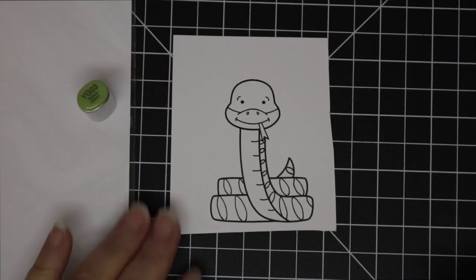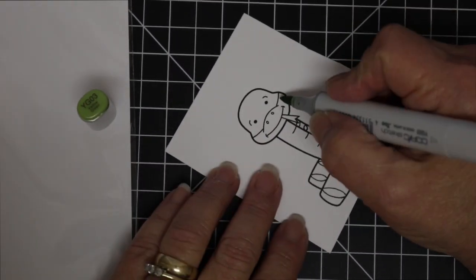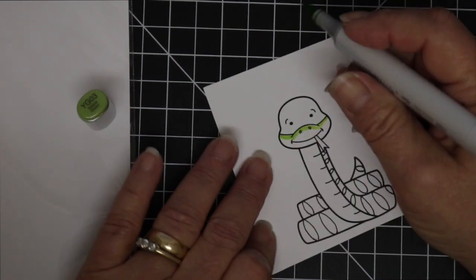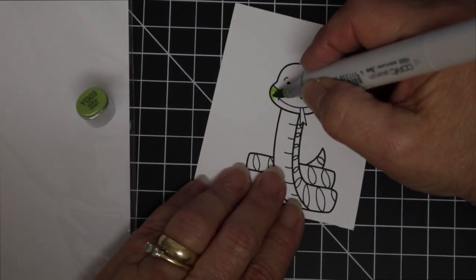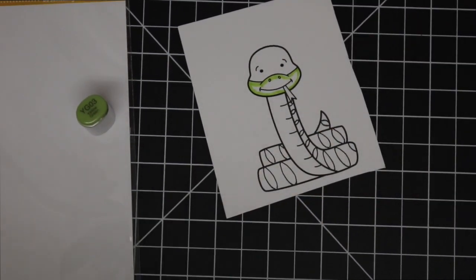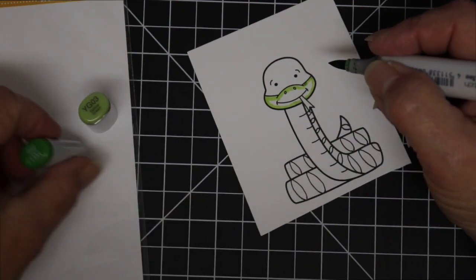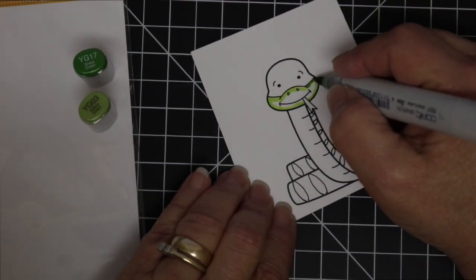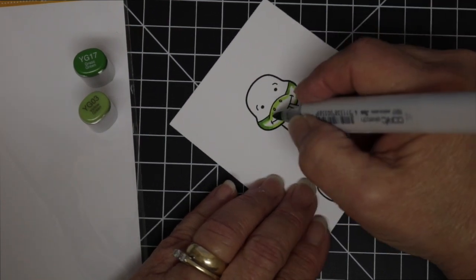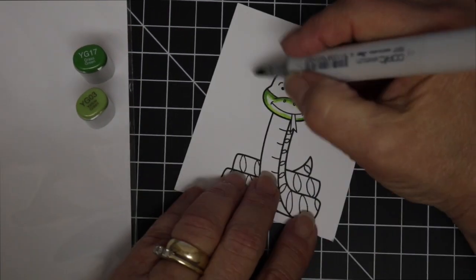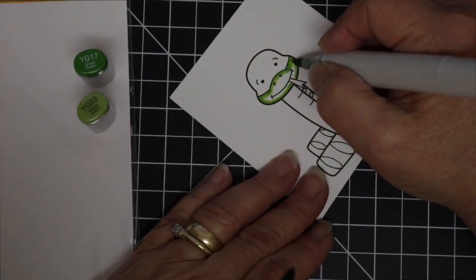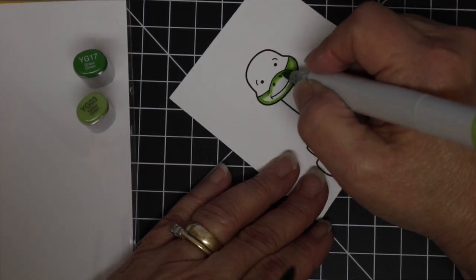So I'm going to be coloring Sassy Snake with some Copics and for his face and his tummy I'm going to be using some YG03 and a YG17. So I just kind of laid out with my lighter color where I wanted to put my darker color and then I will come back in with the YG03 and blend that out.